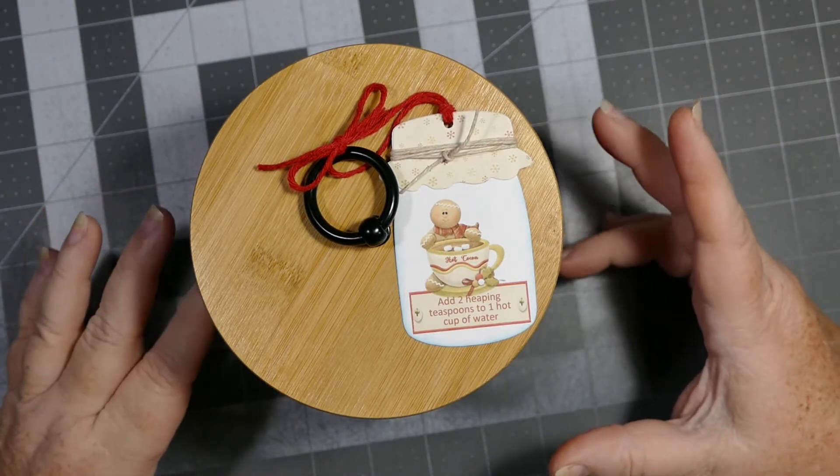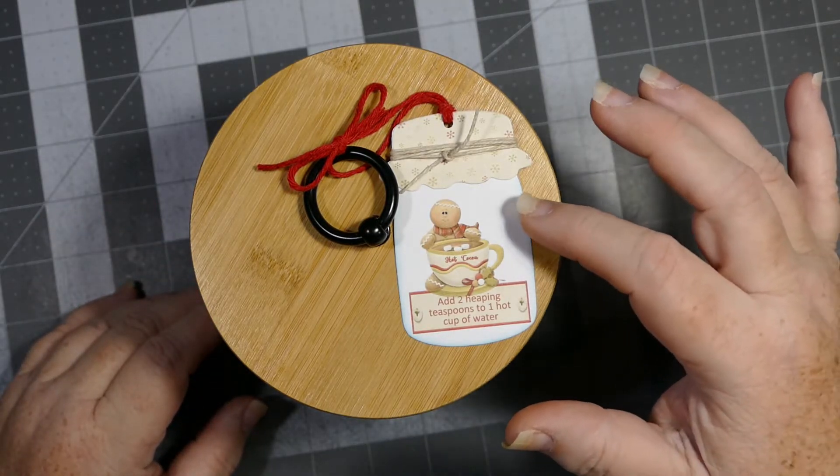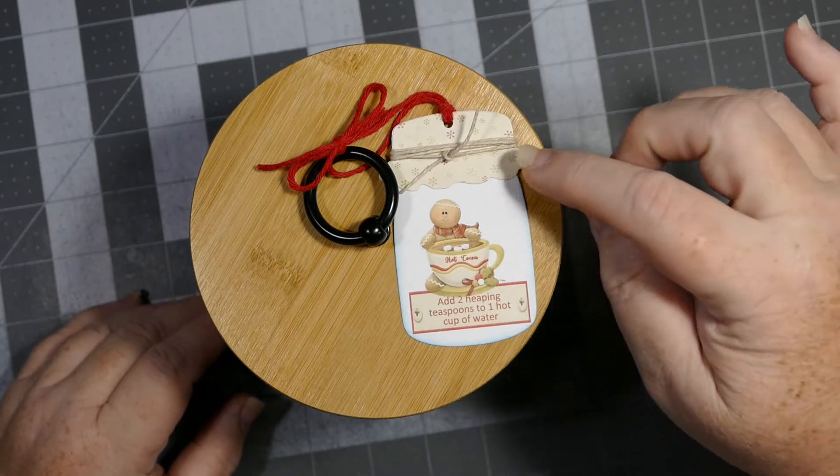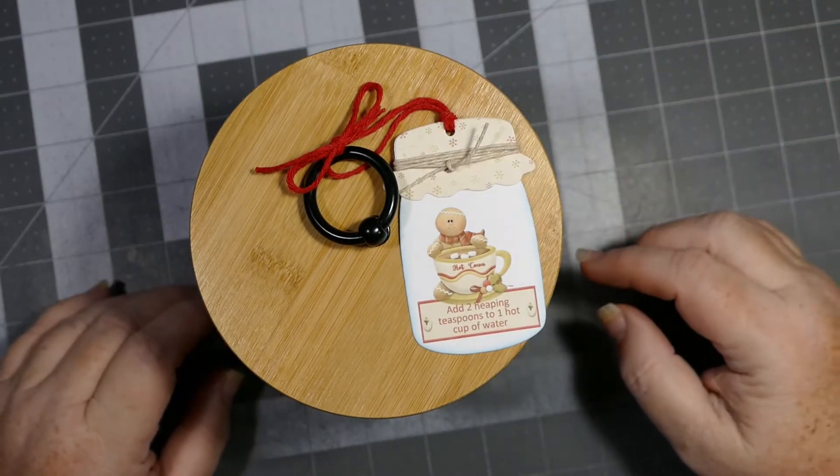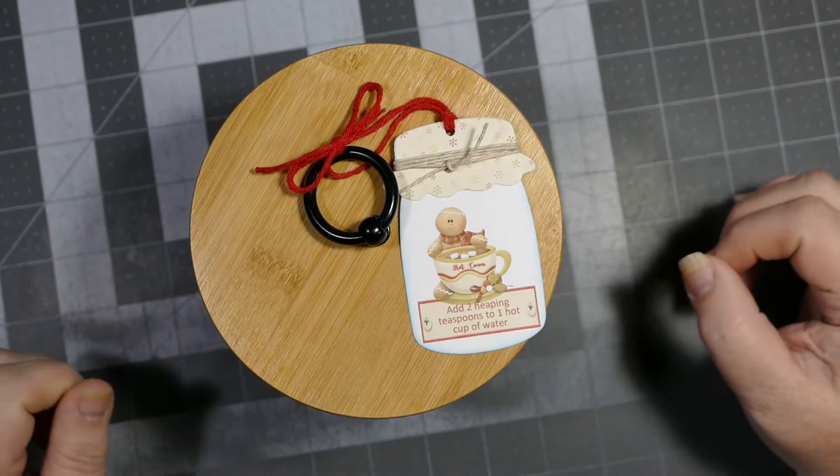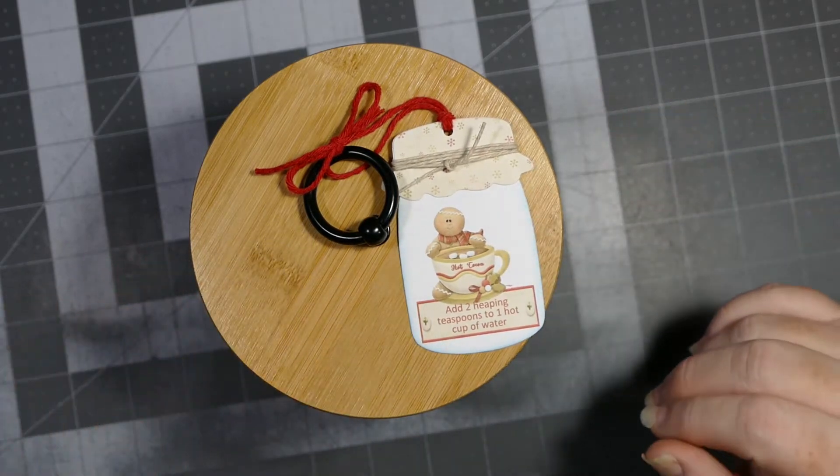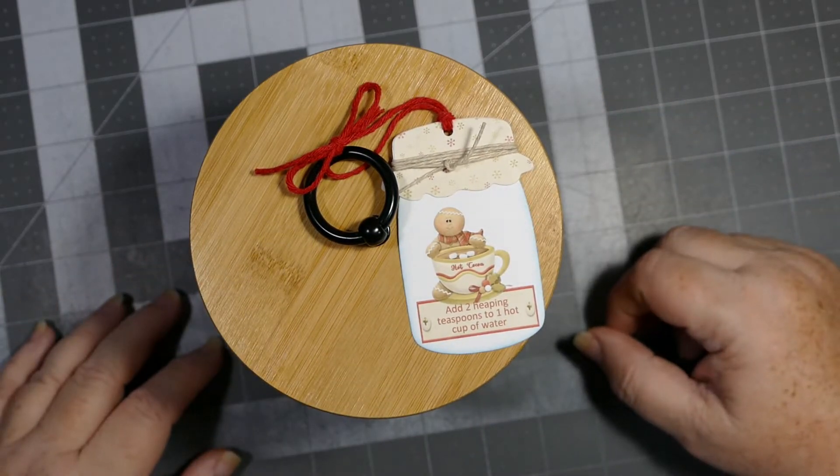But I do think it turned out really cute. I inked up the edges and put a little bit of twine around the top of the cap where the fabric would be, which is what you would do to decorate it if you were making actual little canisters like that.